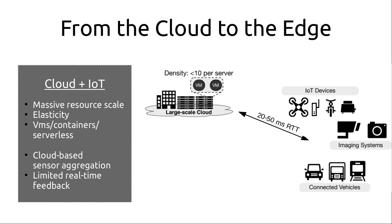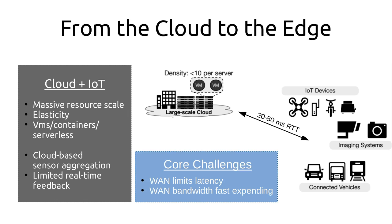When we think about cloud computing, and especially cloud computing for new and upcoming workloads like IoT devices, imaging systems, connected vehicles, and autonomous vehicles, we think about large data centers with massive amounts of resources that can scale for different tenants and provide elasticity for their workloads using mechanisms like virtual machines, containers, and serverless. For these types of devices, we often talk about the cloud providing sensor aggregation and stream processing services, but they usually have very limited real-time feedback. One limiting factor is that the wide area network limits latency because we have 20 to 50 millisecond round-trip times, and the wide area network bandwidth is fast expanding as we get a lot of these imaging and autonomous vehicles online.